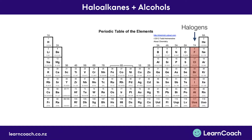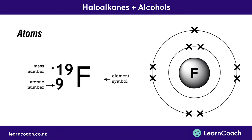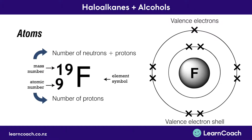Now we'll take a closer look at fluorine. Its mass number is 19, which is the number of neutrons plus the number of protons. Its atomic number is 9, which is the number of protons. Fluorine also has 9 electrons because it has no overall net charge — all the positive protons are balanced by negative electrons. The maximum number of electrons in the first shell is 2, and you can see fluorine has 2 in the inner ring.